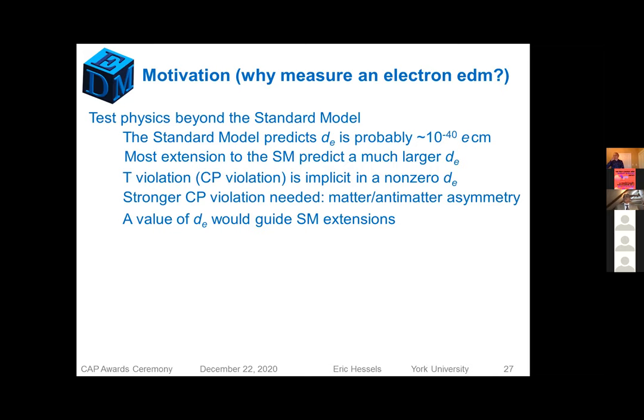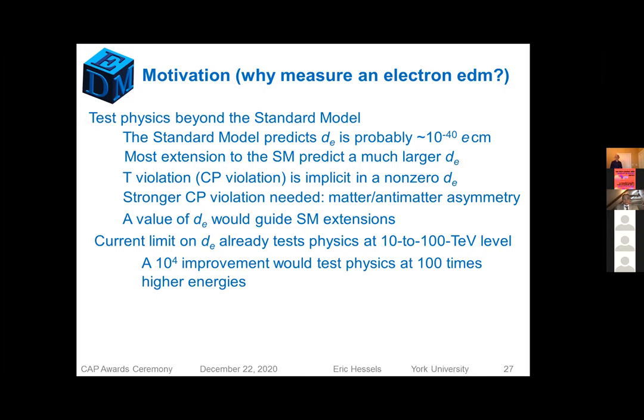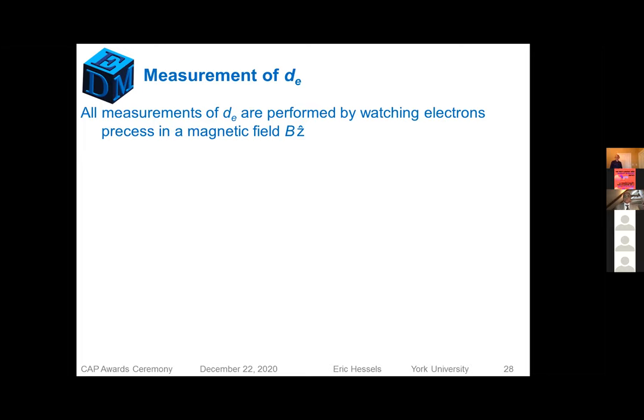If we do see an electron-electric dipole moment, it implies that there's T violation, or if you believe in CPT, CP violation. And that's important because we need CP violation, strong CP violation, to explain the matter-antimatter asymmetry in the universe. And if we could measure the electron-electric dipole moment, we'd therefore be guiding standard model extensions. The current limit that we have on, not we, but we as a physics community have on the electric dipole moment, already tests physics at the 10 to 100 TeV level. If we could improve that by four orders of magnitude, it would start to test physics at 100 times that, or above the PeV level. So we can test very high-energy physics using a precision measurement.